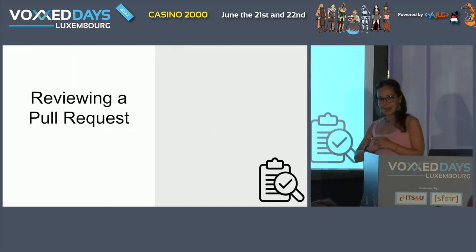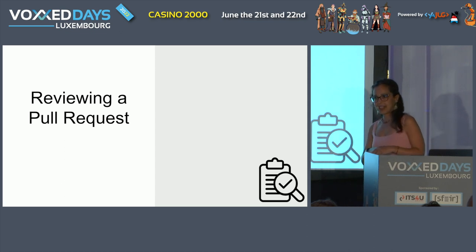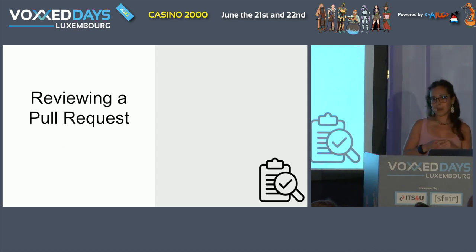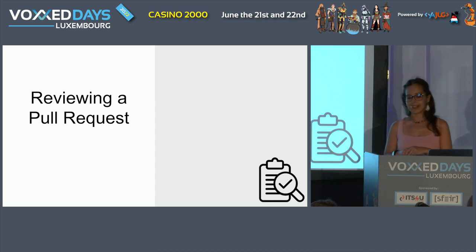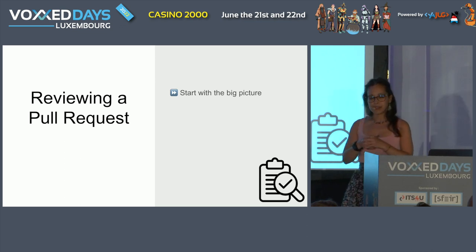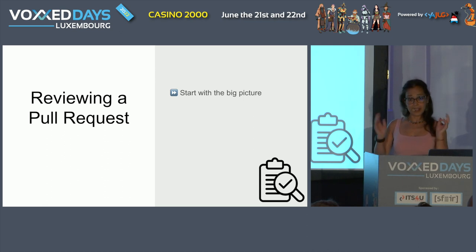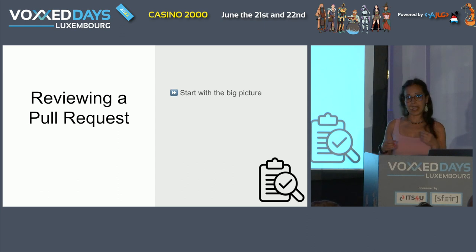The second part of the code review process is reviewing the pull request itself, where I'm playing the role of a reviewer. As a reviewer, I should start by having a big picture of the pull request, trying to understand what's going on and what's the goal. And thank you for your summary and description — you are telling me what the goal is and what you are trying to achieve, so I will be able to give you proper feedback.